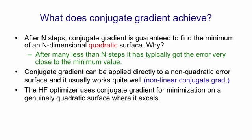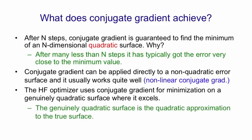The Hessian-free optimizer uses conjugate gradient for minimization on a genuinely quadratic surface. And that's what conjugate gradient is best at. It works much better for that than for a non-linear surface. This genuinely quadratic surface that HF is using it for is the quadratic approximation to the true surface that was made by the Hessian-free method. So it makes that approximation. It uses conjugate gradient to get close to a minimum for the first approximation, and then it makes a new approximation to the curvature and does it again.